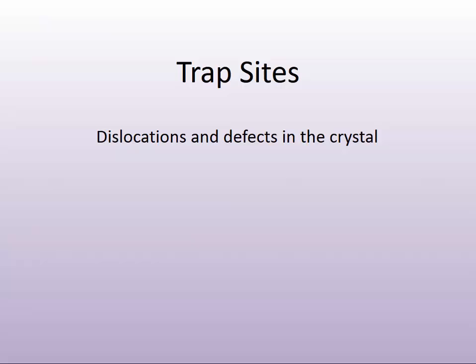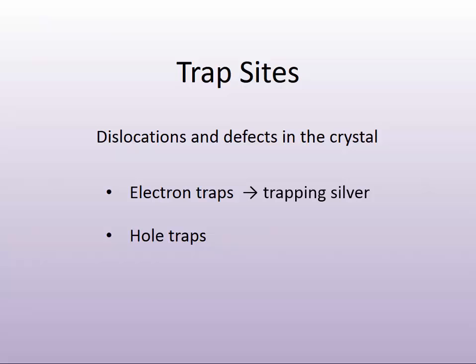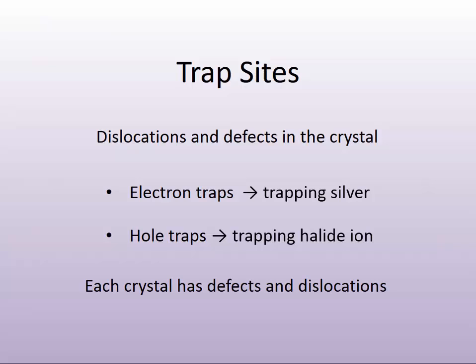These are dislocations and defects within the crystal. When I say trap site, I'm talking about a defect site — either a point defect or a dislocation of some kind. They can be electron traps, where they'll trap silver — this could be an area with a more negative charge attracting the silver. Or they can be an area where silver is congregated, which would represent what's called a hole trap, forming a trap which holds the reactive halide ion. When I use this term in latent image theory, this is where gelatin gets involved in the process, but we have to wait to discuss that in more detail. Each crystal has a plurality of defects and dislocations, and these are going to be sites where a lot of the photochemical reactivity occurs. There are about a dozen or so of these trap sites in every crystal.